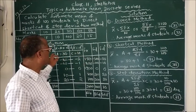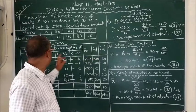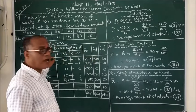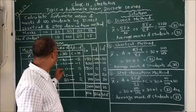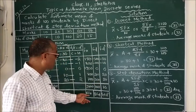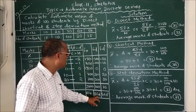Multiply f and x and you will get the column fx. Multiply f and d and you will get the column fd. Multiply f and d dash and you will get the column fd dash.